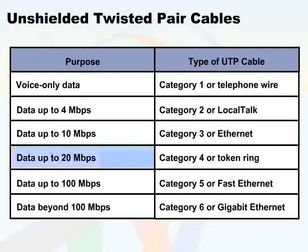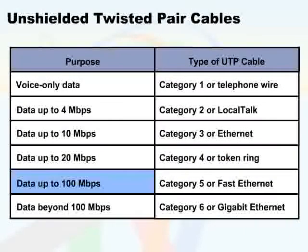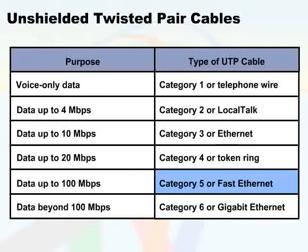For data up to 20 Mbps, we'll want to use Category 4 or Token Ring UTP cable. And for data up to 100 Mbps, use Category 5 or Fast Ethernet UTP cable.